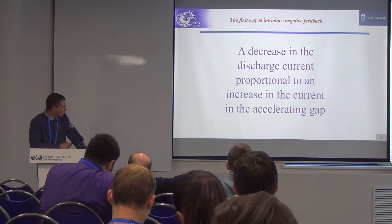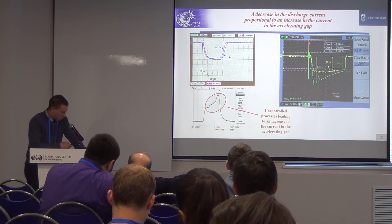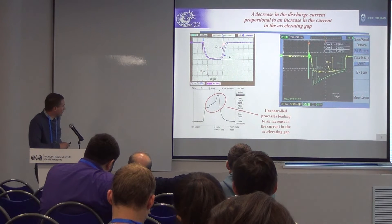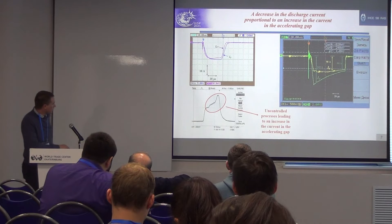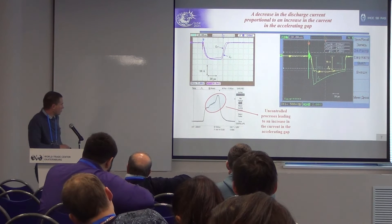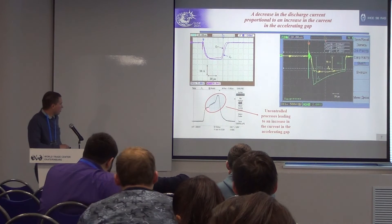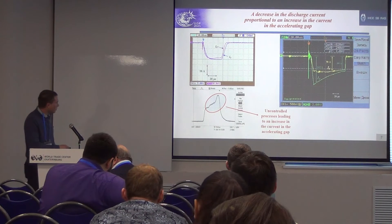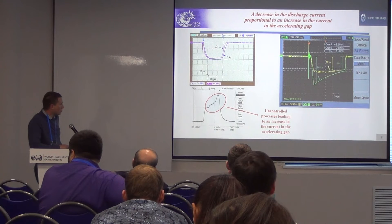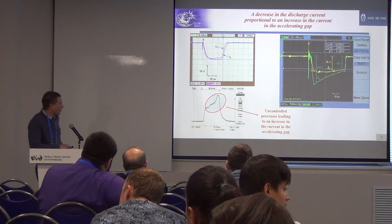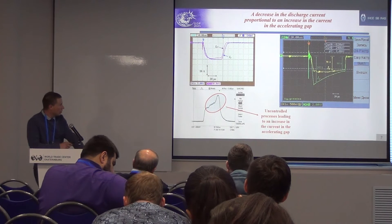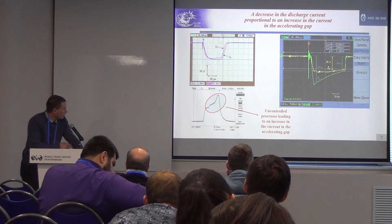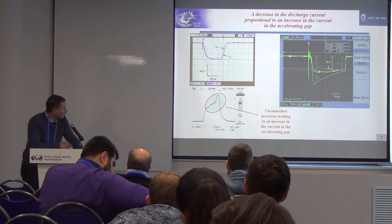The first way to introduce negative feedback is very simple, but it works. Usually, the form of the current in the accelerating gap repeats the form of the discharge current, but sometimes there is an uncontrolled process leading to an increase in the current in the accelerating gap. This is why we designed a power supply where we can change the form of the discharge current — the discharge current decreases during the pulse — and we can obtain an electron beam with constant amplitude.